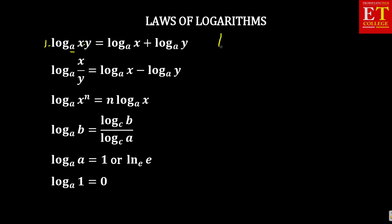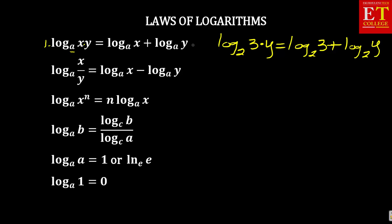For example, suppose you are given log base 2 of 3 times Y. This is the same as saying log base 2 of 3, plus — because of the multiplication sign you introduce a positive sign — plus log base 2 of Y. The most important thing to remember is that when there is a multiplication sign between the two, you introduce a positive sign between the logs. That is the first law.